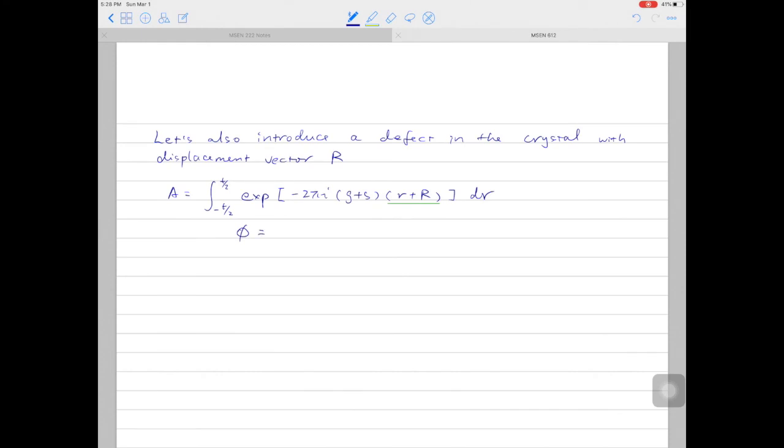Now we have two factors, φ can be written as 2π(g+s)·(r+R), then expand it. We will have four terms here. g multiplied by the small r, the lowercase r, because it's at Bragg's condition, so this will drop off. And also the s, excitation error, multiplied by the big R, because this value will be very small. So we'll drop that off as well. In the end, we'll have 2π(s·r + g·R). Put it back into the amplitude equation. We have exponential here, then minus 2π multiply by s·r plus g·R.